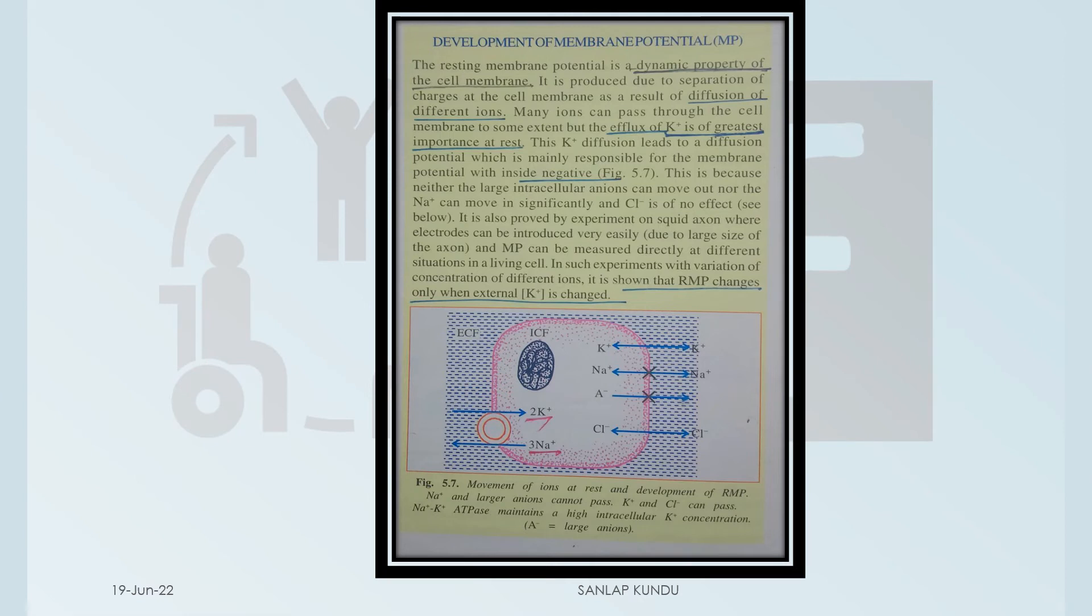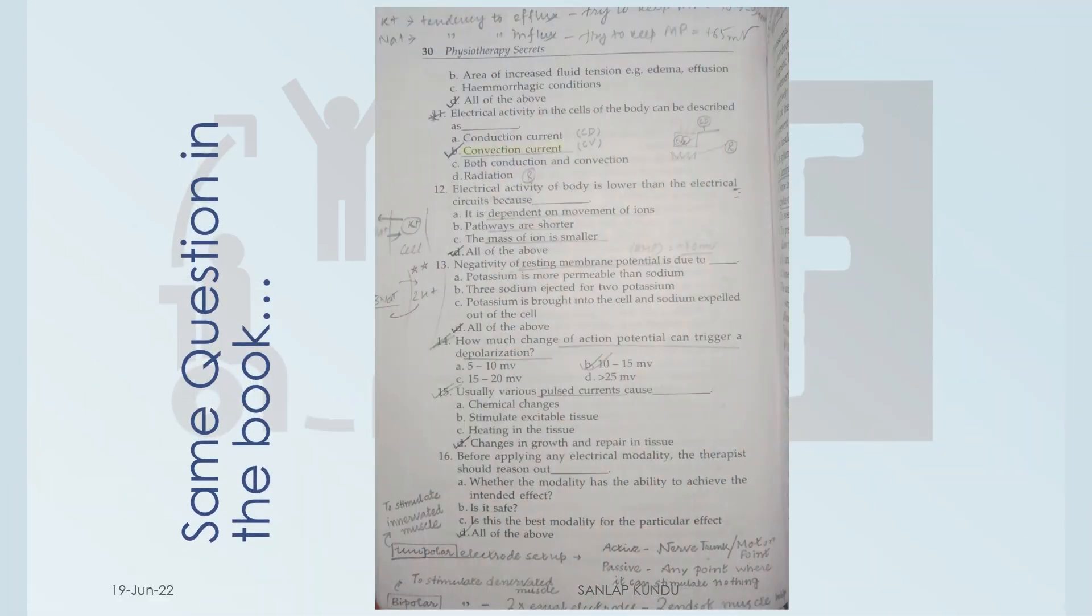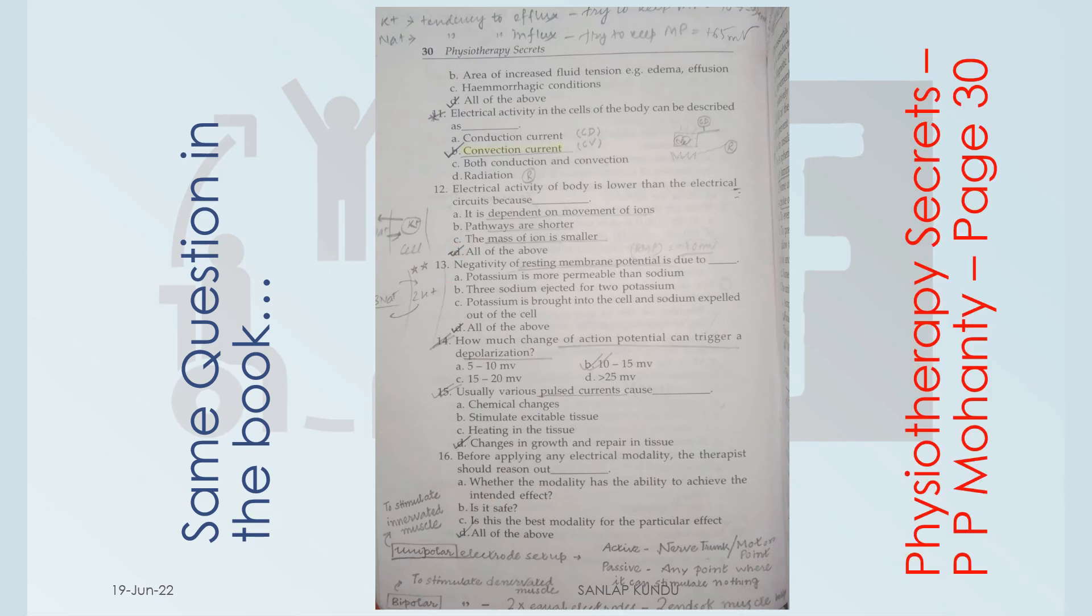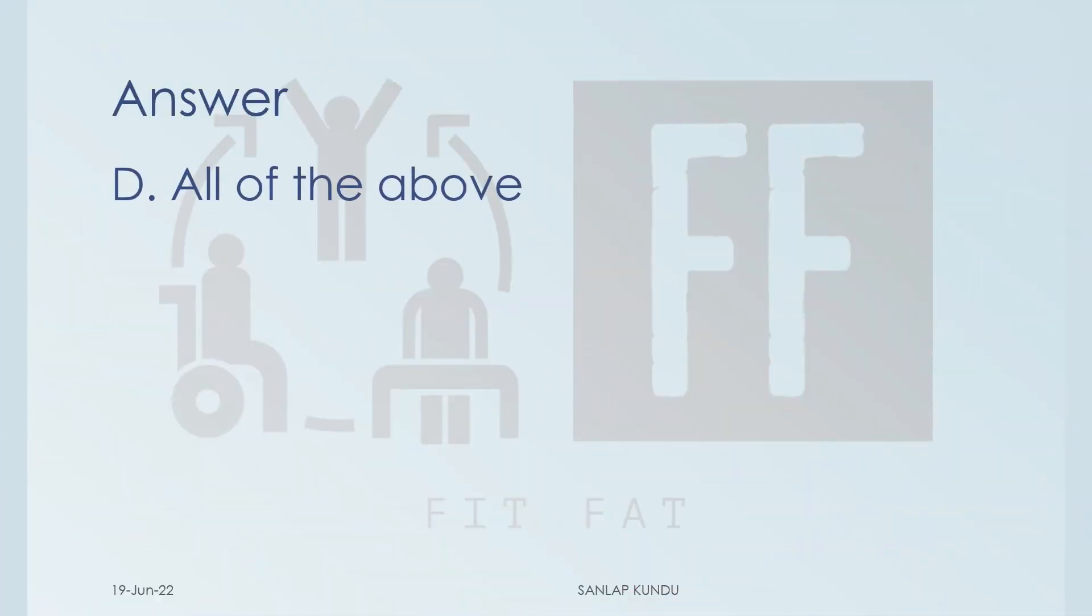Now you can check this in the ABSM book, page number 150. You can see the same question in this book, question number 13. This is PP Mohanty's book, and option D is from page number 13. So the answer is option D, all of the above.